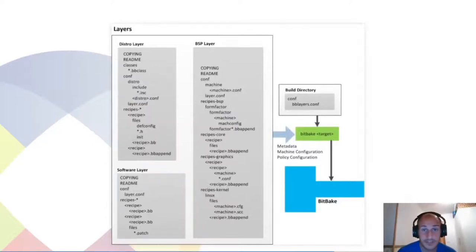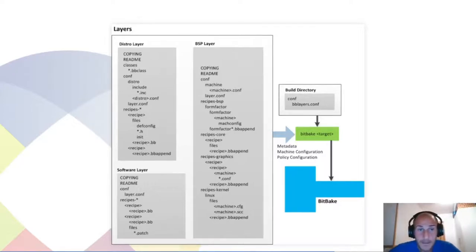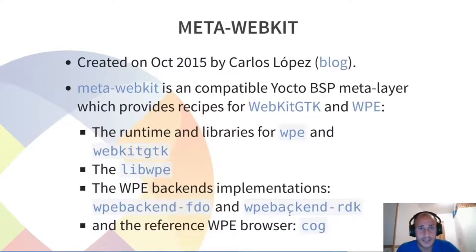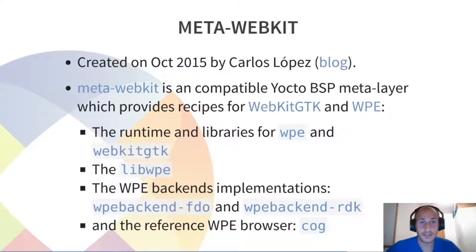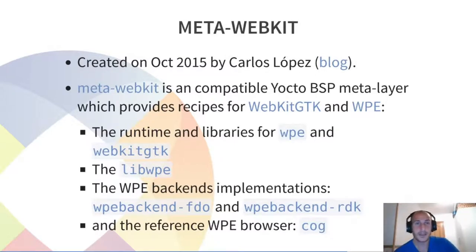The Yocto build environment is structured in layers. Think of a layer as a set of recipes, classes, and definitions that extend the base distribution. On top of Yocto, we are going to use the meta-webkit layer, specifically for WPE WebKit. This layer was created in 2015 by Carlos Lopez. It is a compatible Yocto meta-layer which provides recipes not only for WPE but for WebKit-GTK as well. It provides the runtime and libraries for WebKit, it provides several backends, and of course the Cog browser library as well.